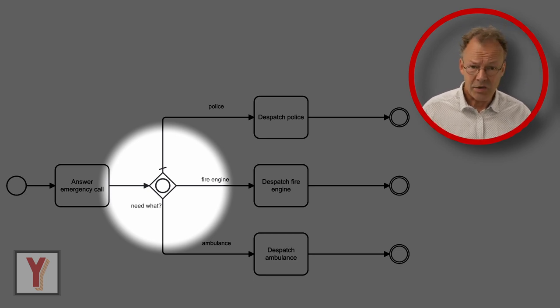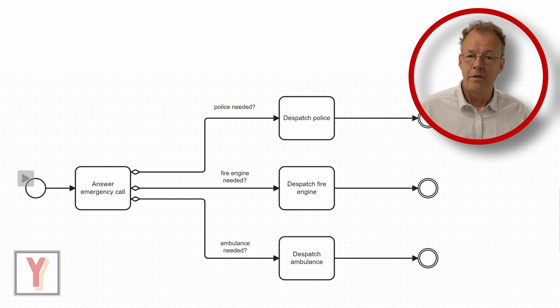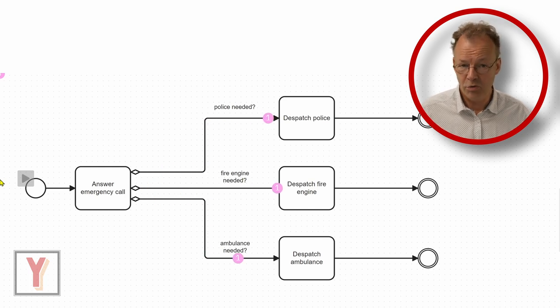The second way is with an implicit split with conditions on the arcs. The token simulation only shows the case where all conditions are evaluated to true.